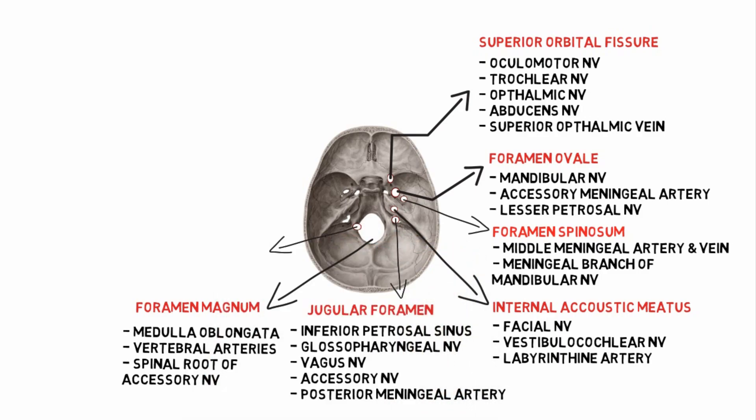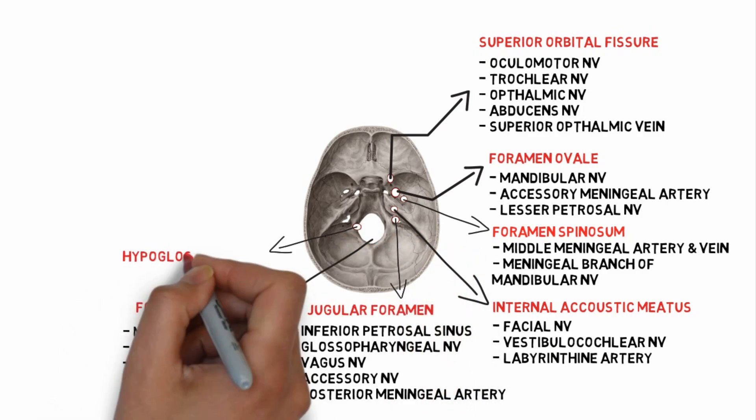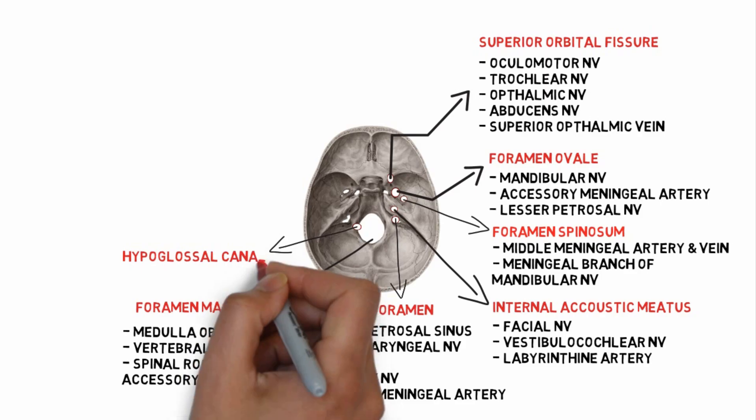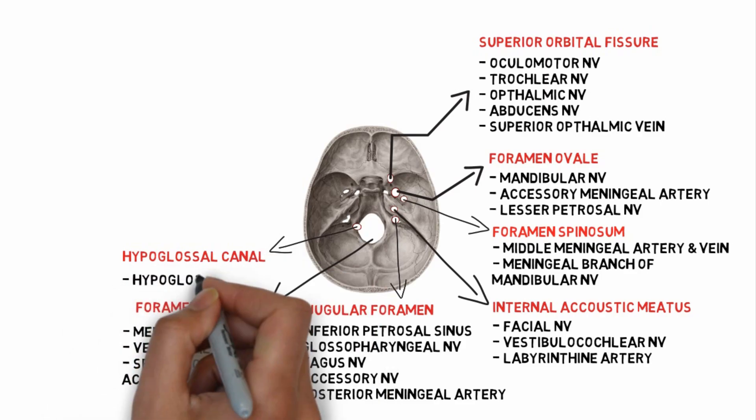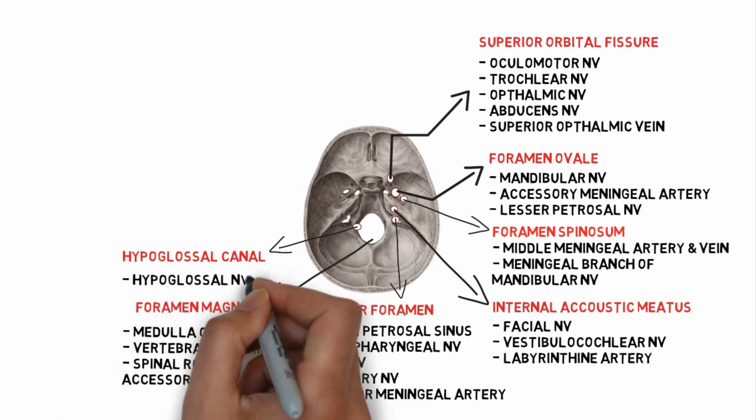The seventh one is the hypoglossal canal. The structure passing through it is the hypoglossal nerve.